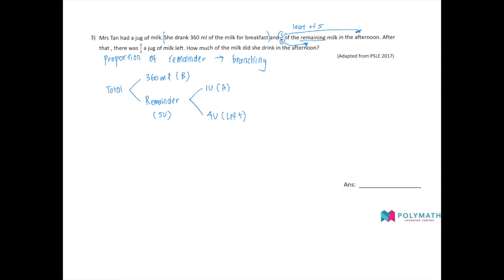All right, so we will do it until here. So now they give you another proportion. What is left is actually half a jug of milk. All right, so that means half of the total. So if this is equal to half of the total, I can actually find the total is how many units.